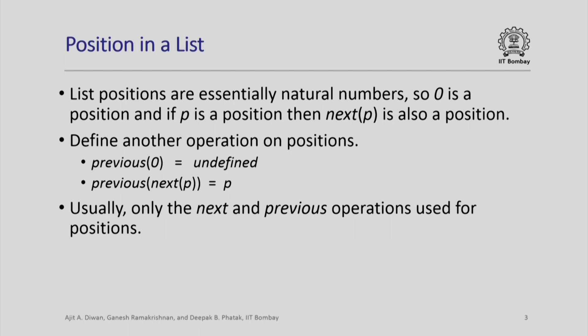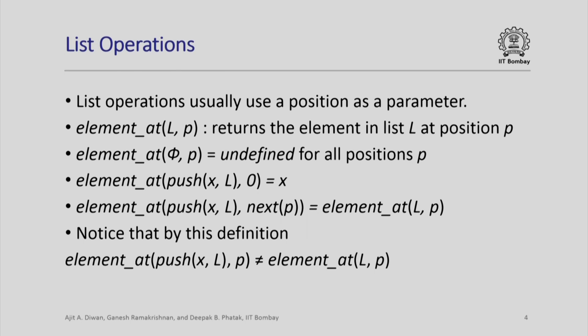List position is another type whose value you can think of as just a number. Zero is a position, and if p is a position then there is a next position called next of p. Sometimes we also need a previous operation: previous of 0 is undefined, whereas previous of next of p is equal to p. Given any position p we can define a previous position to it, except for the 0th position where it is undefined. Usually we need only these two operations — given a current position, we can move to the next or the previous position. List operations will generally use positions as parameters.